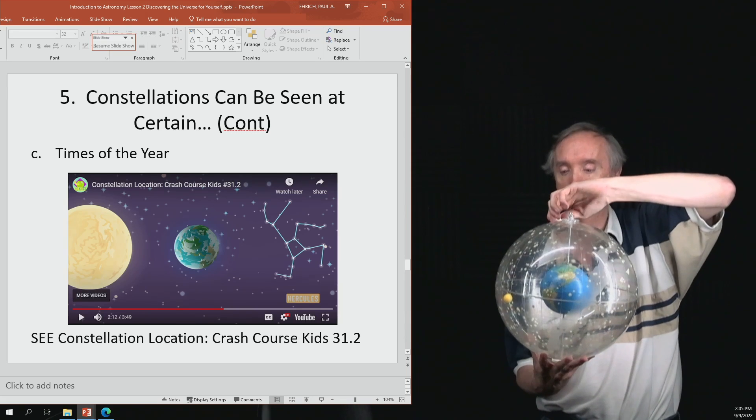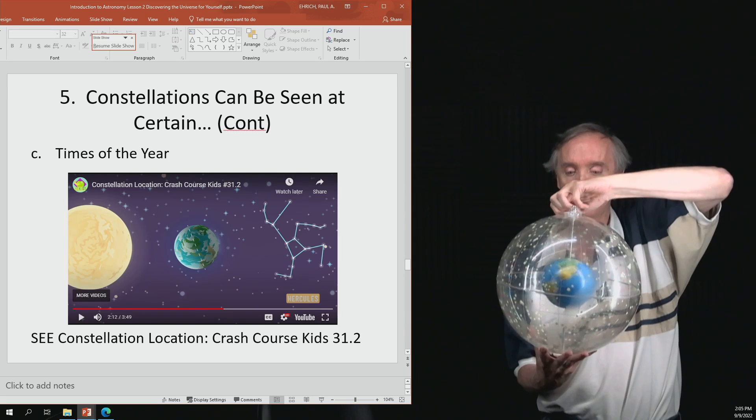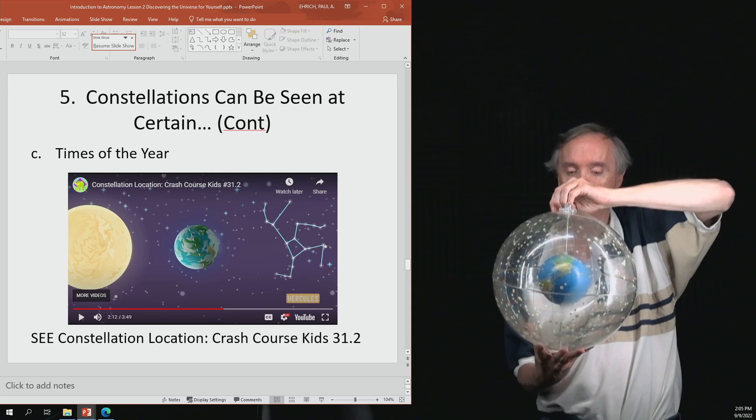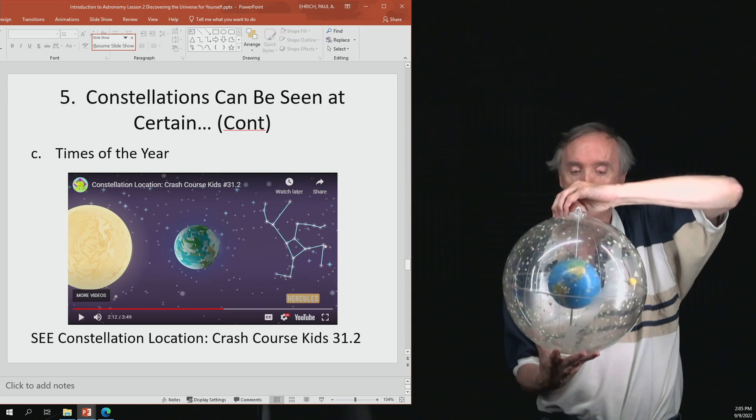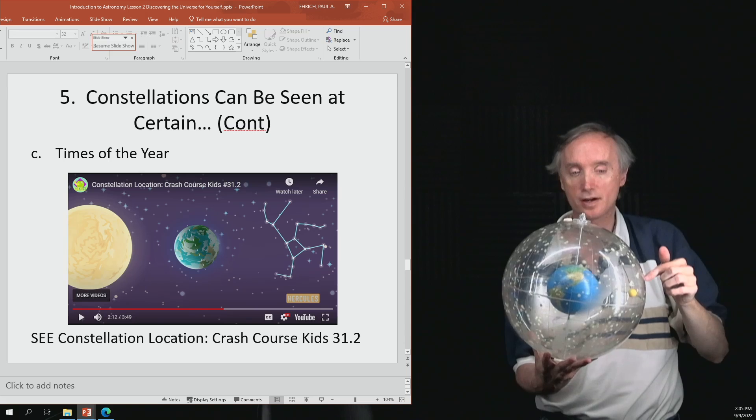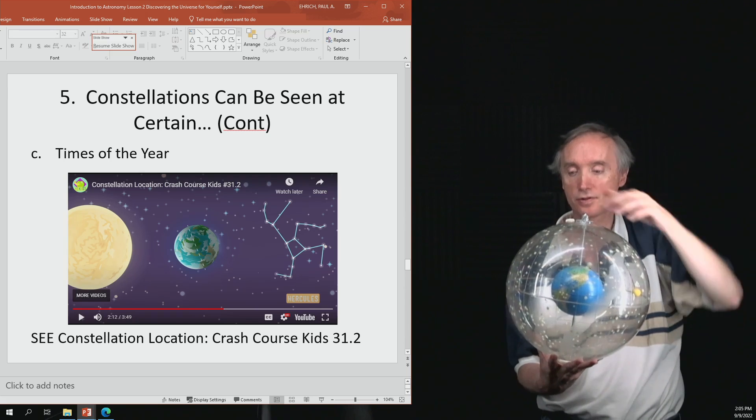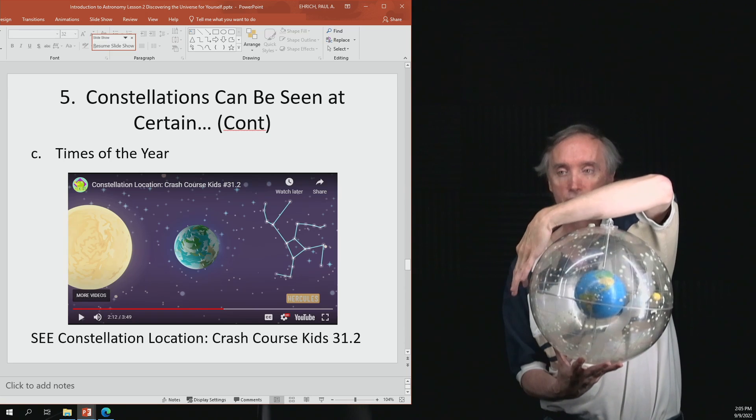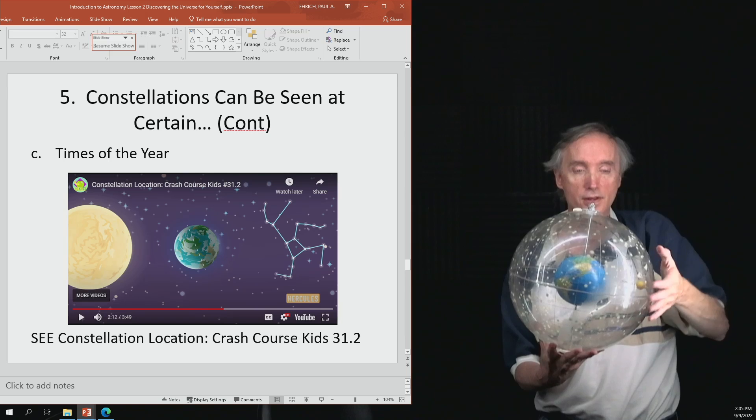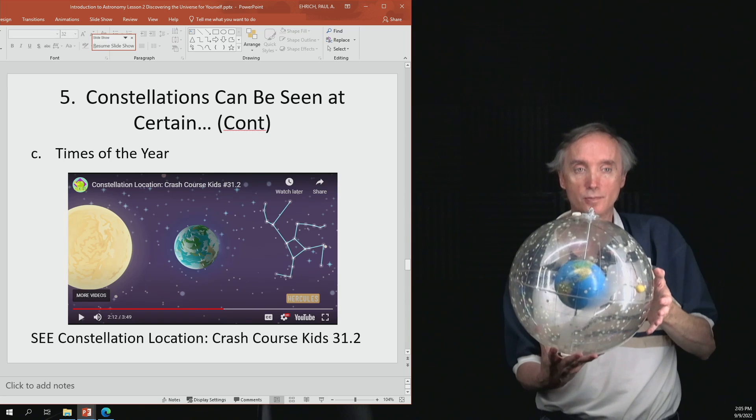And then, six months later, so let me rotate it around. Six months later, the Earth is on the other side of the sun. And so now these constellations would be visible. And now these, you wouldn't be able to see because it would be during the daytime.